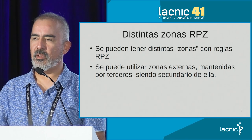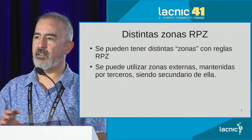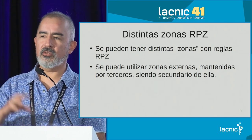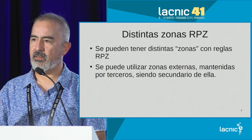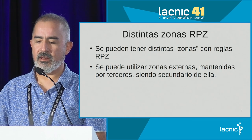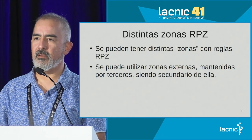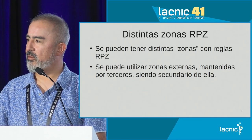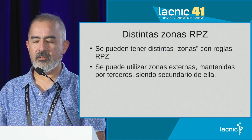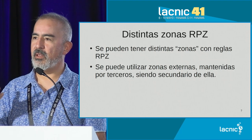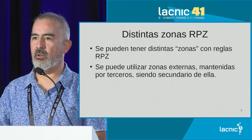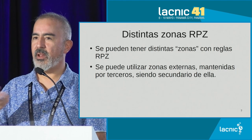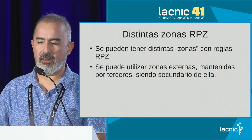You can have more than one RPZ zone in a resolver. You can decide to have different policies in different parts administered by different people. An important thing about RPZ zones is that they are true DNS zones, so they can be administered by different people. You may also have external zones — there are people that specialize in putting these zones together and some are paid while others are absolutely free. This fits very well with what was said earlier about Mexico: there may be institutions that gather threat intelligence, realize that there are domains with malware, and make this available to the public or their members in DNS zone format, so that anyone can be a secondary and benefit from all this.